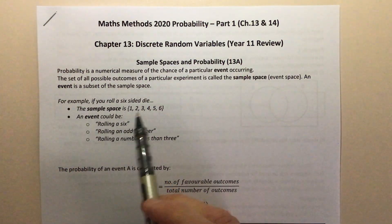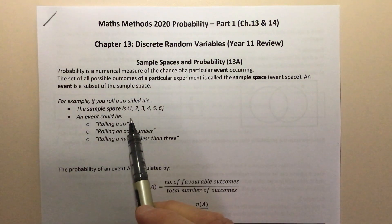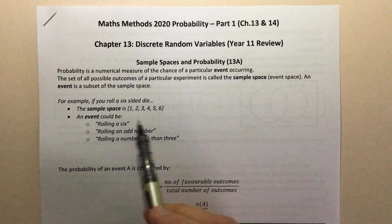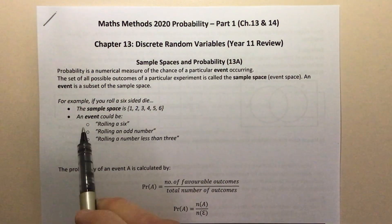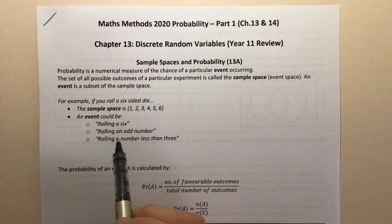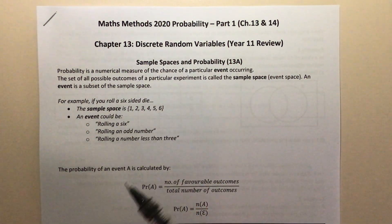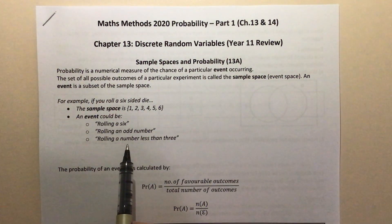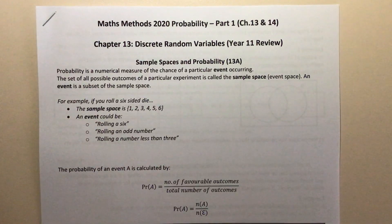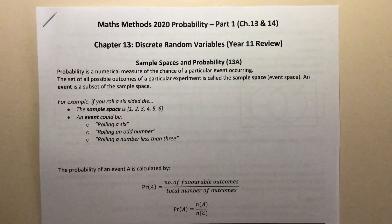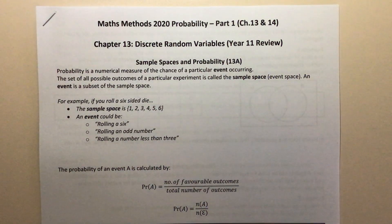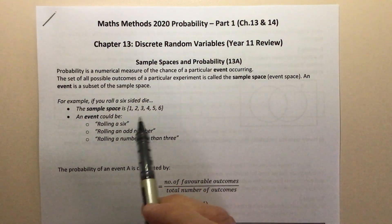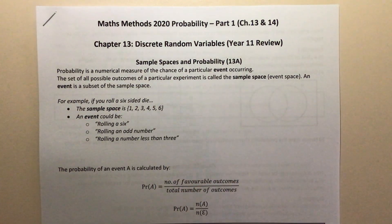For example, if you roll a six-sided die, the sample space would be {1, 2, 3, 4, 5, 6}, because those are all the possible outcomes. An event could be any of these things — like rolling a six, that's an event that can either happen or not happen; rolling an odd number; or rolling a number less than 3. These are all events that can either happen or not happen when we conduct this experiment of rolling a die.